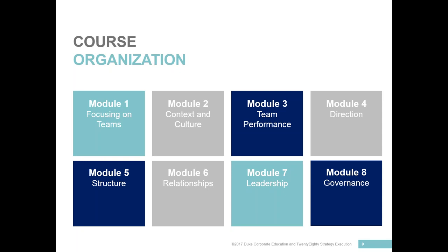The course is organized around eight modules. Module one focuses on teams themselves. Module two deals with context and culture within organizations and teams. Module three deals with team performance. Module four is about directing teams. Module five covers the various structures of teams. Module six deals with relationships within the team and with the broader organization. Module seven covers leadership issues around building effective teams, and module eight deals with the governance of effective teams and their structure.